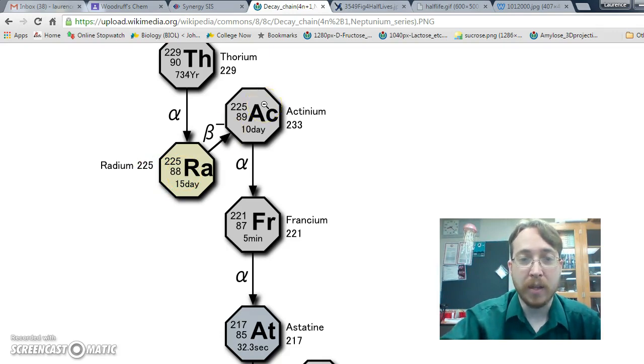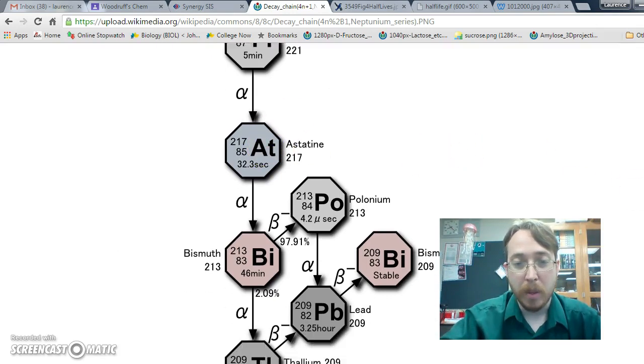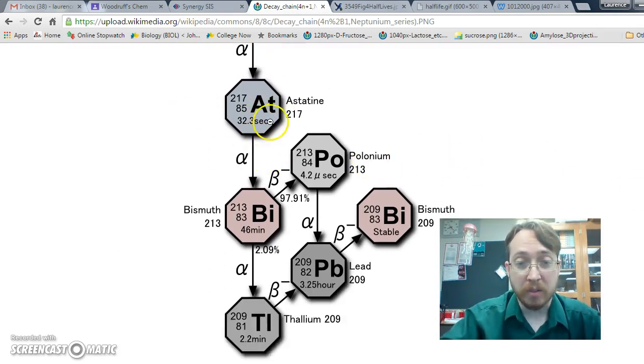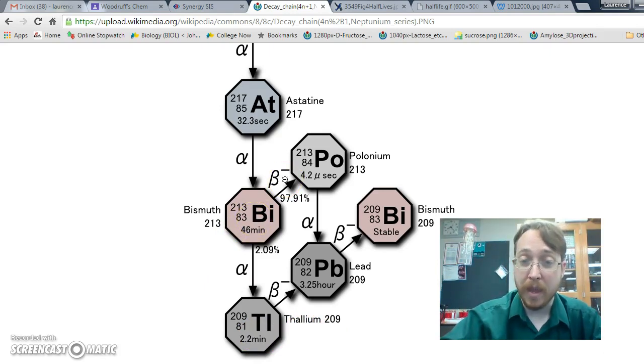And then it'll undergo beta decay to become actinium, still not stable. Alpha decay to become francium, francium undergoes alpha decay to become astatine. And this continues. Astatine can undergo alpha decay to become bismuth-213. Now, bismuth's got a choice. Sometimes bismuth undergoes alpha decay to become thallium-209, and sometimes bismuth undergoes beta decay to become polonium-213. So we've got a fork here.